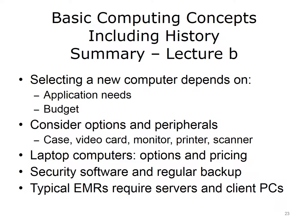This concludes Lecture B of Basic Computing Concepts, Including History. In summary, this lecture explored the process of selecting a new computer. Determining your needs and budget are the first steps. Consider which applications you will be running and how much storage you need. The latest computers will be the fastest and have the latest options, but often you do not need the extra speed or options, so purchasing an older computer with fewer bells and whistles may suffice. Options will affect the price — things such as the case, the video card, the monitor, and the printer should also be included in your budget. It can be easy to overspend when looking at new computers, and you will need to do some research to determine which options you will need.